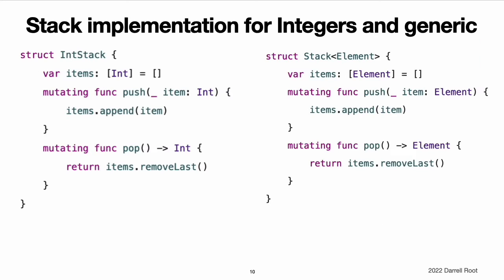Here is how to write a non-generic version of a stack, in this case for a stack of integer values. This structure uses an array property called items to store the values in the stack. Stack provides two methods, push and pop, to push and pop values on and off the stack. These methods are marked as mutating because they need to modify or mutate the structure's items array. The intStack type shown here can only be used with integer values, however. It would be much more useful to define a generic stack structure that can manage a stack of any type of value.